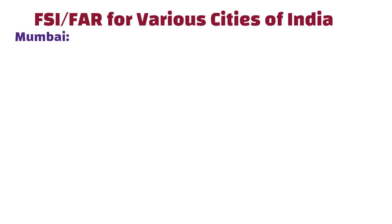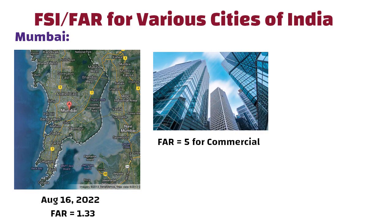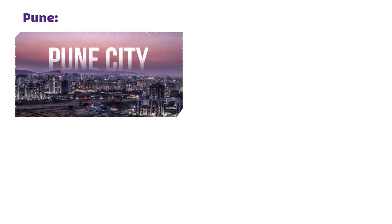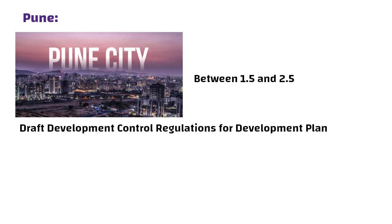FSI or FAR for various cities of India. Mumbai: As of August 26, 2022, the Floor Space Index in Mumbai is 1.33. The government has increased the FSI to 5 for commercial areas and 3 for residential areas. Pune: The permitted FAR in Pune is between 1.5 and 2.5 as per the Draft Development Control Regulations for the Development Plan. However, Pune authorities do allow the FAR to go up to as high as 4, and 5.5 for slums.